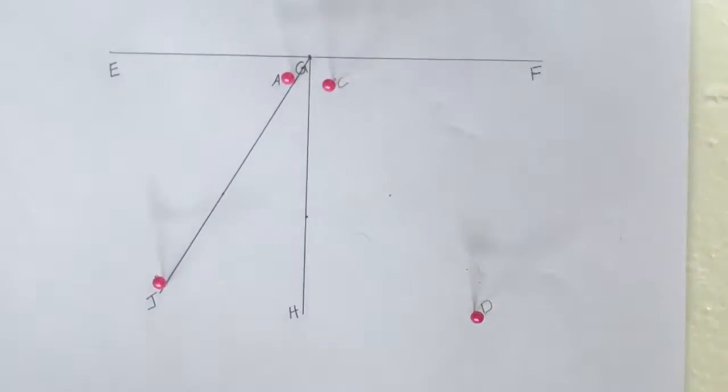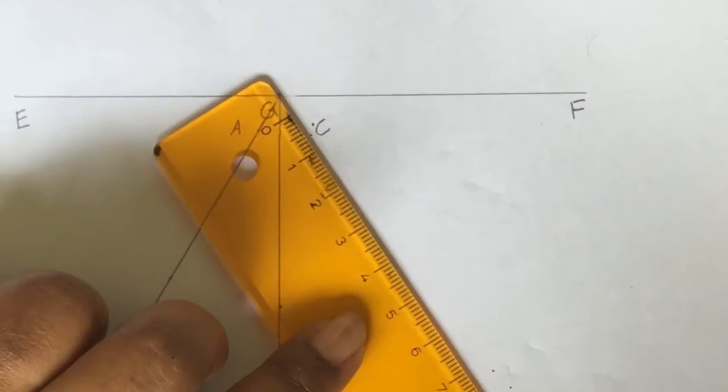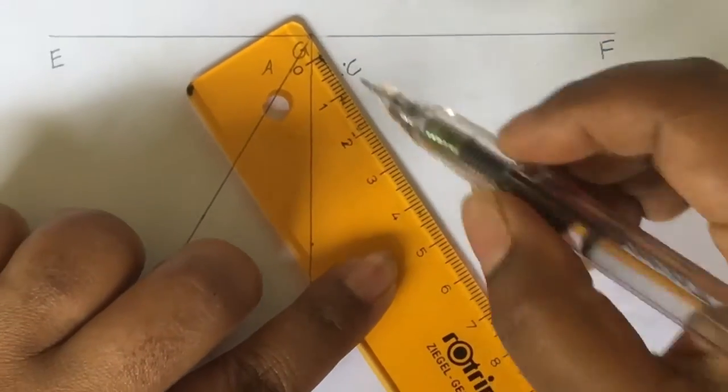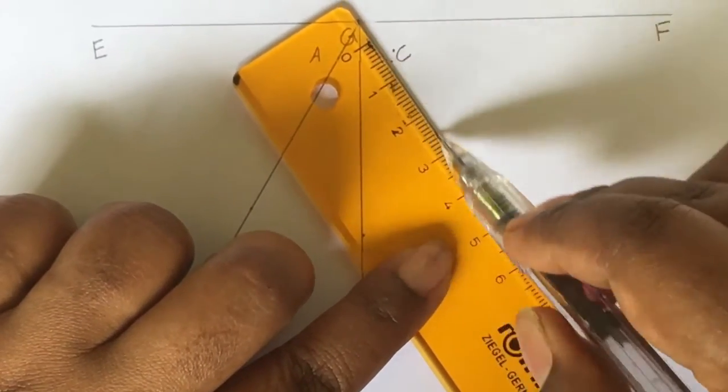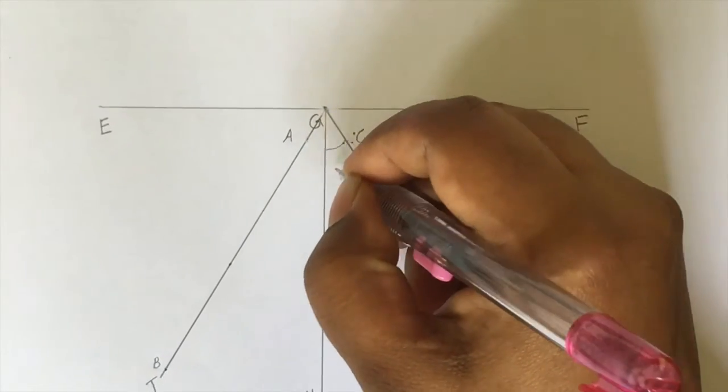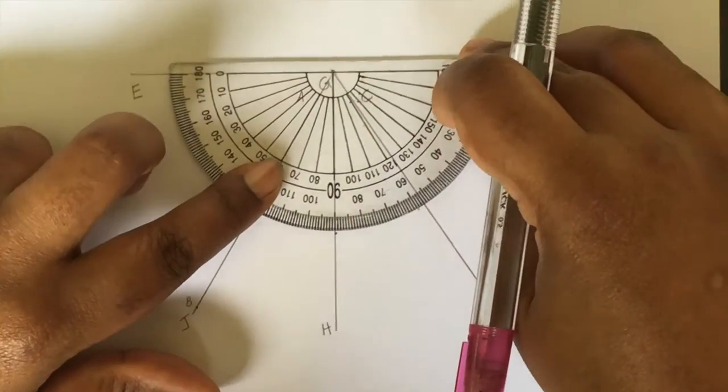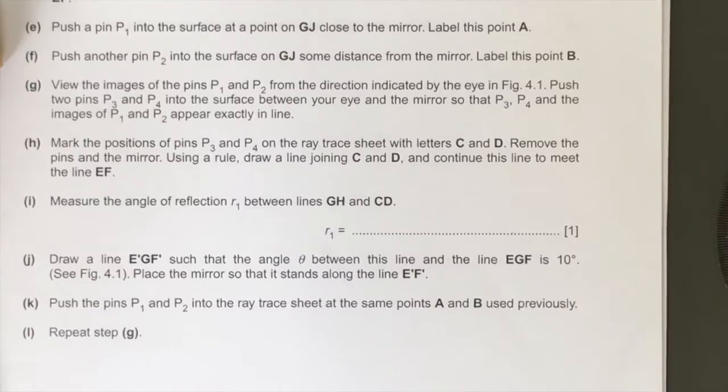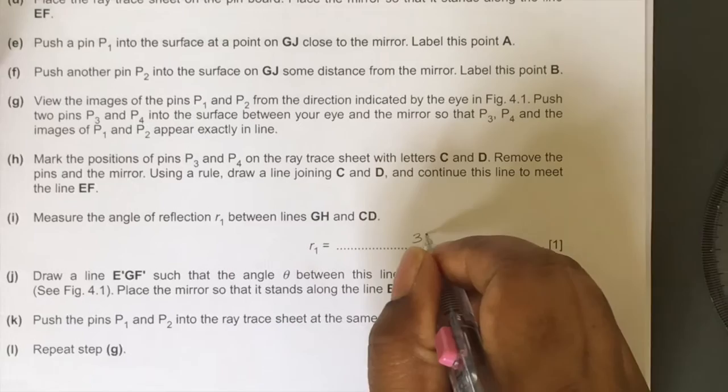Remove the pin and the mirror. Draw a line joining C and D that continues to meet the line EF. Mark the angle of reflection as R1. Measure this angle of reflection. Note it down in your answer sheet.